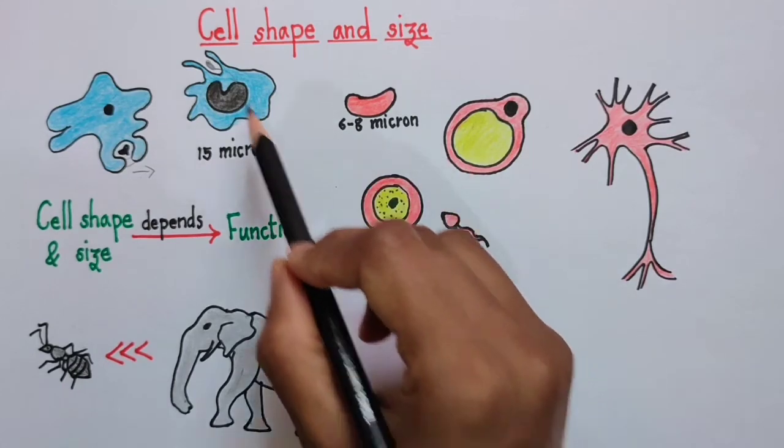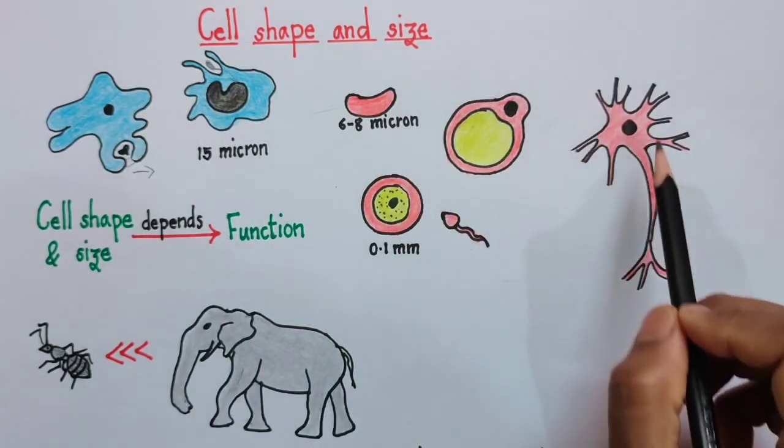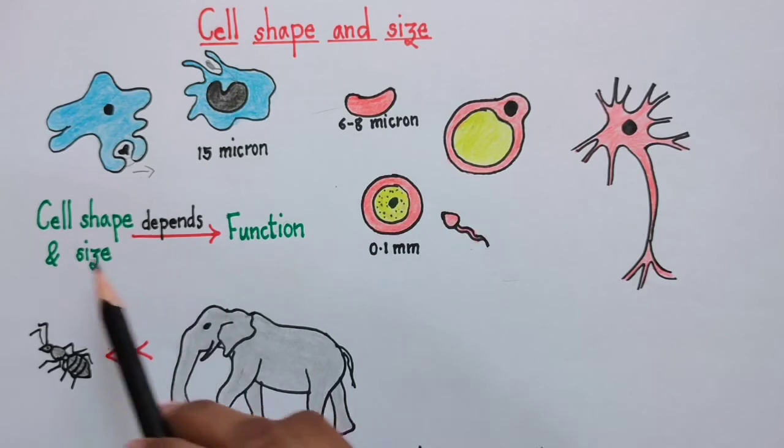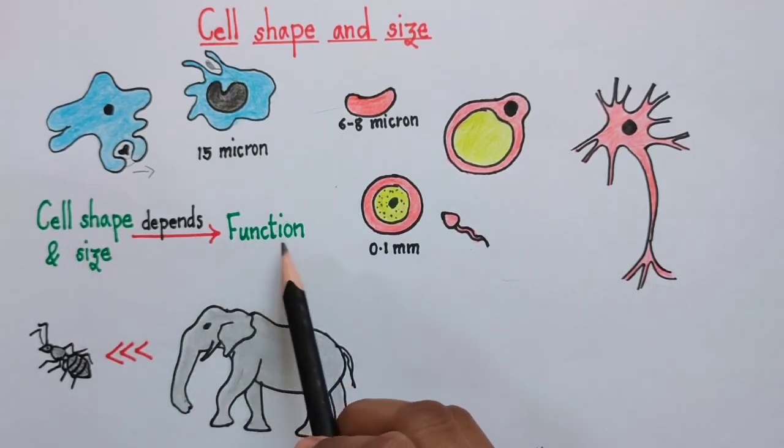So from all these examples, we can clearly conclude that the cell shape and size depends upon its function.